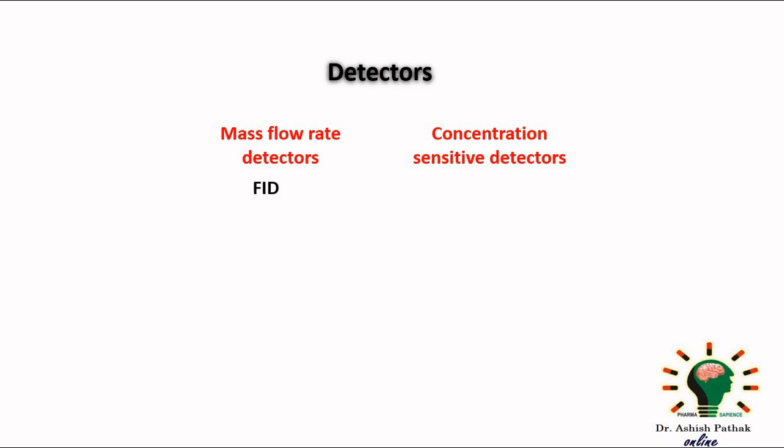Examples of mass flow rate detectors are flame ionization detector FID, thermionic specific detector modified form of FID, and flame photometric detector based on basic principle of flame photometry.